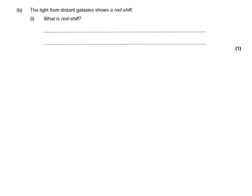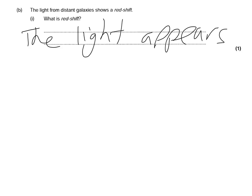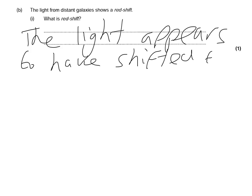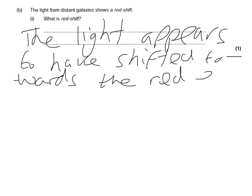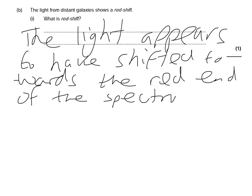The next part of the question says the light from a distant galaxy shows a redshift. It asks you to explain what redshift is. Redshift is when the light appears to have shifted towards the red end of the spectrum — that's the visible light spectrum — so the light appears to have shifted towards the red end of the visible light spectrum.